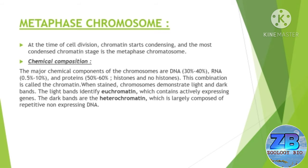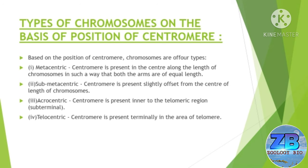Now the types of chromosomes on the basis of position of centromere. Based on the position of centromere, chromosomes are of four types. The first one is metacentric: the centromere is present in the center of the chromosome in such a way that both arms are of equal length.